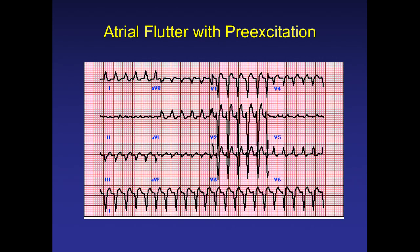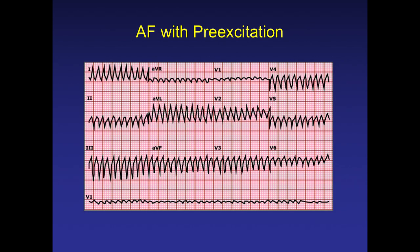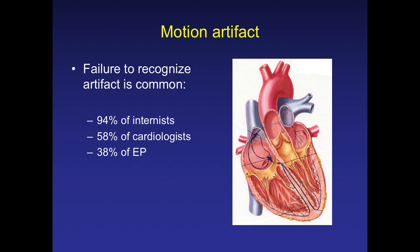There were examples of atrial flutter with pre-excitation already shown. The point of showing so many examples is that we should not panic whenever we see wide complex tachycardia. Applying basic principles, most of the time everyone can come to a diagnosis. This is a good case of atrial fibrillation with pre-excitation — if you look carefully at the RR intervals, they are irregularly irregular.